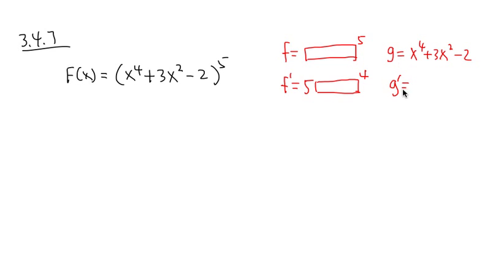And then we also need to get g prime. So x to the fourth power, the derivative of that is going to be 4x to the third power, and the derivative of positive 3x squared is going to be plus 6x. That's going to be my ingredients.